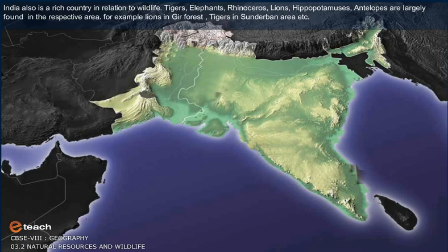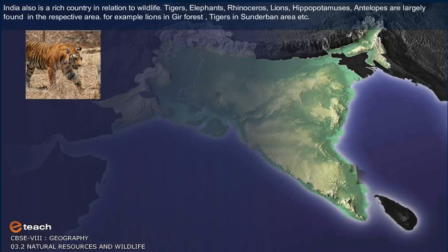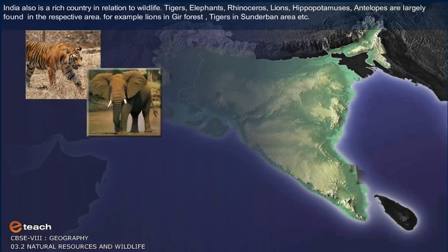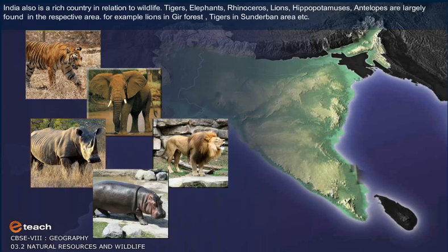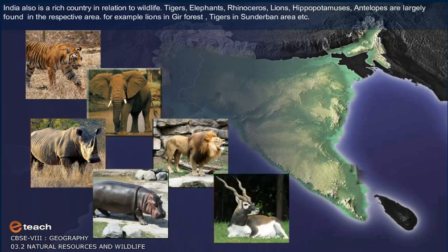India is also a rich country in relation to wildlife. Tigers, elephants, rhinoceros, lions, hippopotamuses and antelopes are largely found in their respective areas. For example, lions in Gir forest and tigers in the Sundarbans area.